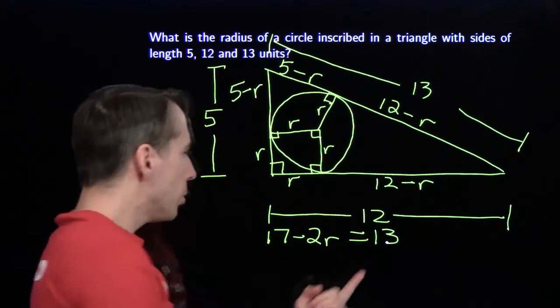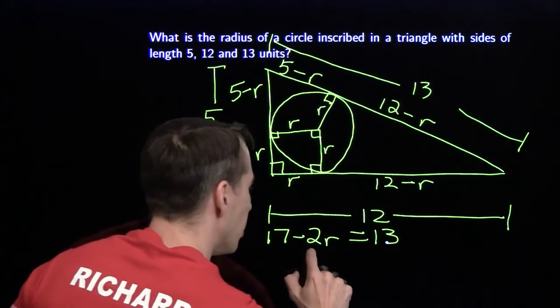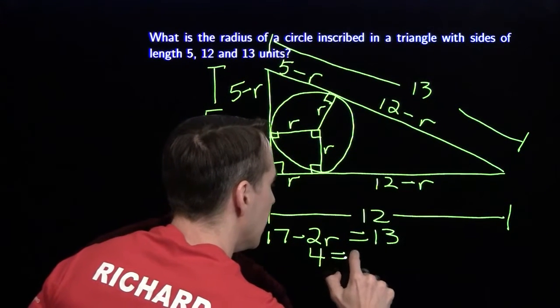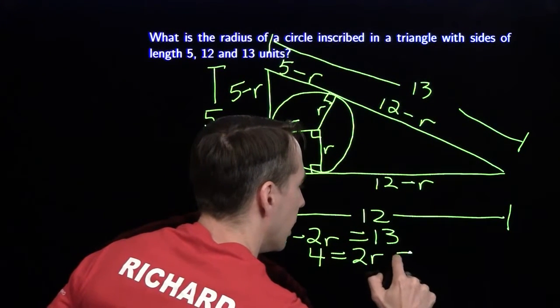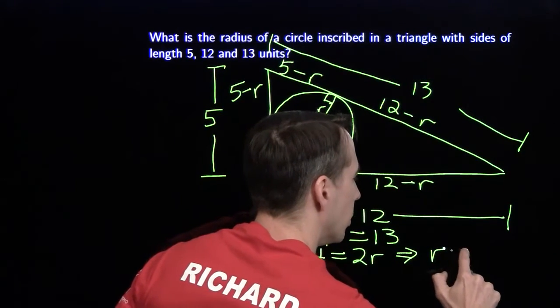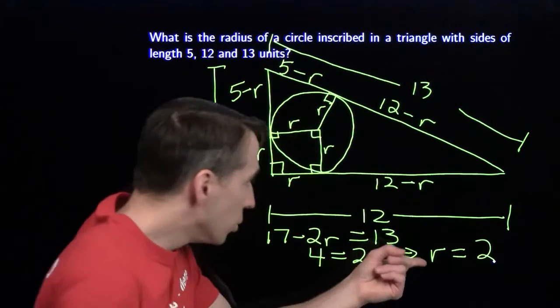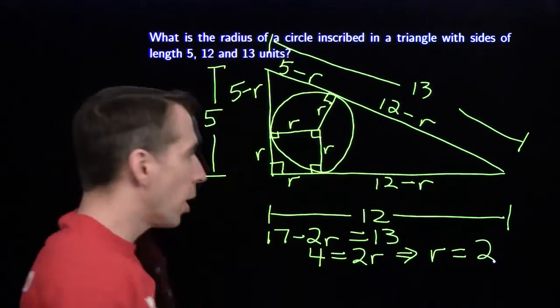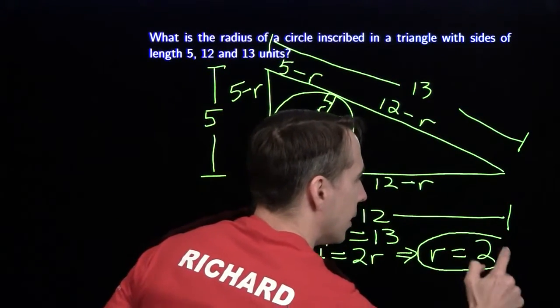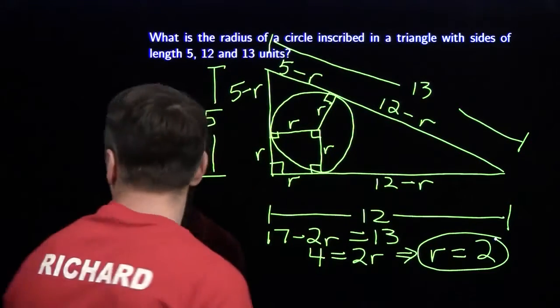So now I just add 2r to both sides, subtract 13 from both sides, and I have 4 equals 2r. And that tells me that r is 2. And since I use my variable for the thing I'm looking for, I can just write down that 2 as my answer. And I'm ready for the next problem.